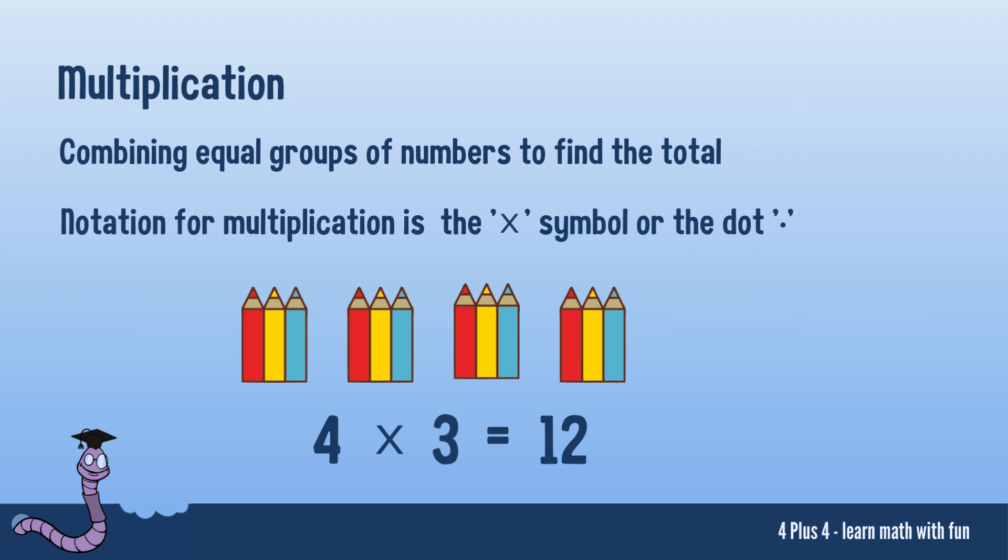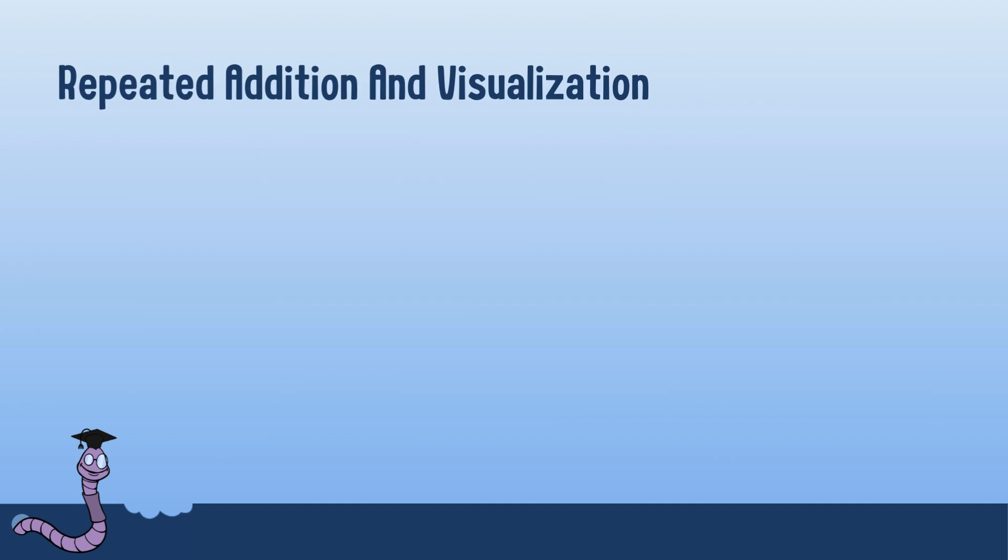In multiplication, we use the x symbol or a dot to represent the operation. Here's a neat trick: multiplication is closely linked to repeated addition.